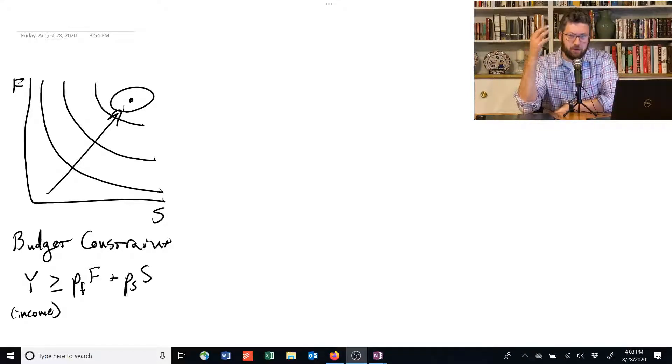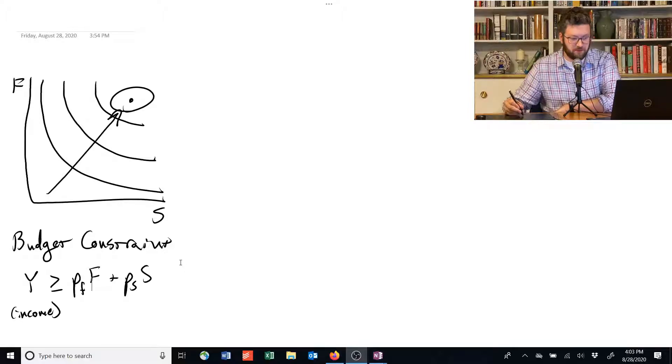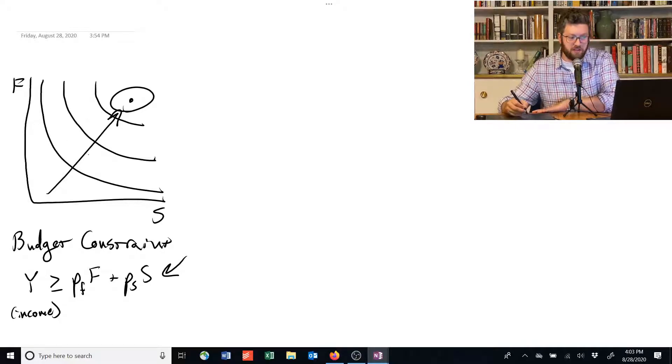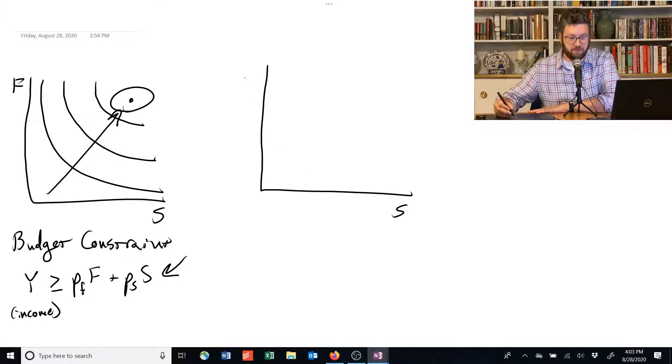So the last video that we looked at introduced this picture and introduced this budget constraint down here. We can graph this budget constraint on the same figure that we graph food and shelter. Let's make a new one just to keep things clean.